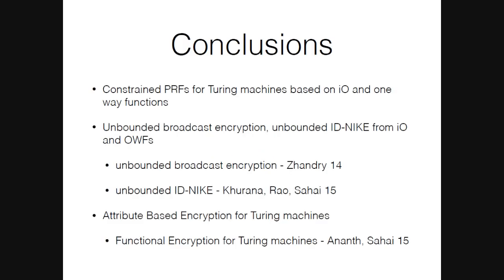Can you say a word about adaptive security? Our construction only gives selective security. For all of these applications, the direct constructions actually give adaptive security, but by our construction we only get selective security. Could complexity leveraging help, assuming sub-exponential security of IO? In the case of unbounded inputs, we cannot do complexity leveraging.